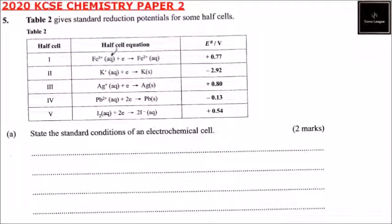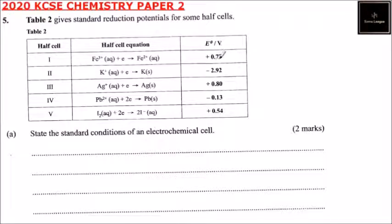Question number five. Table two gives standard reduction potentials for some half cells. Half cell one: iron in aqueous solution gains one electron and is reduced to iron 2+ ions. The voltage is positive 0.77. Half cell two: potassium ions in aqueous solution gain one electron and change to potassium solid. The voltage is minus 2.92.